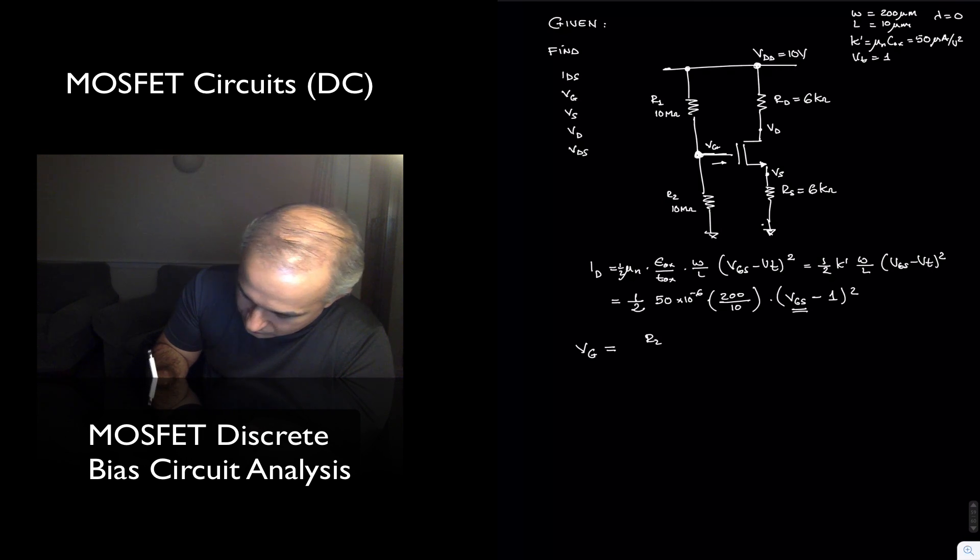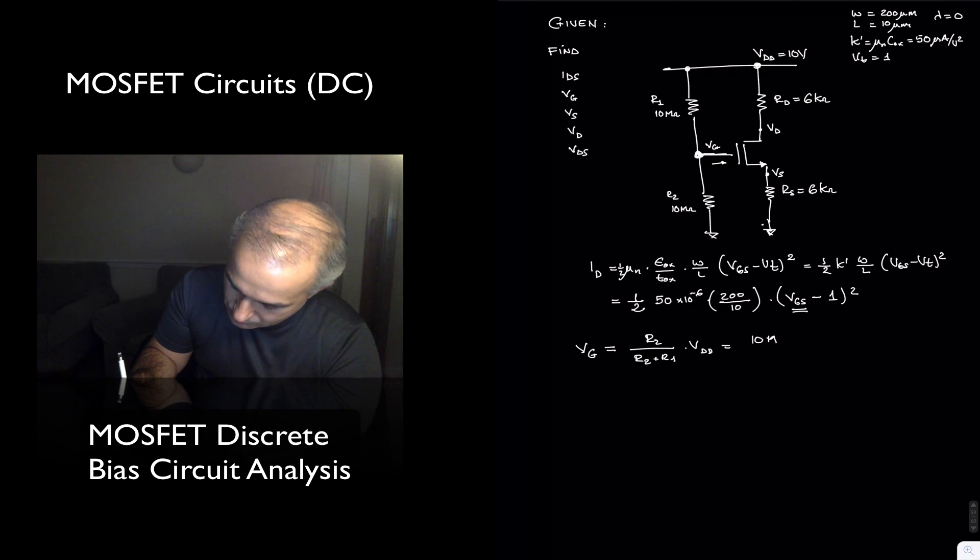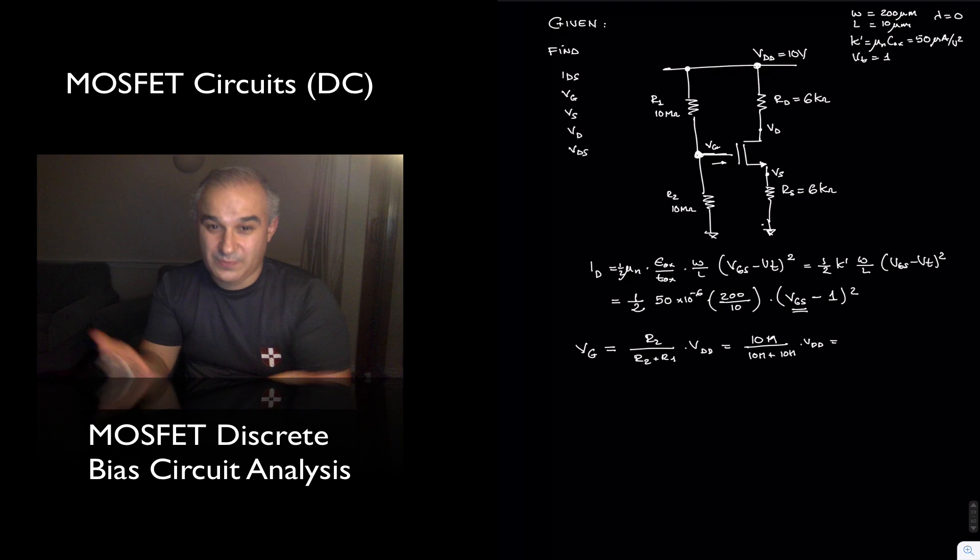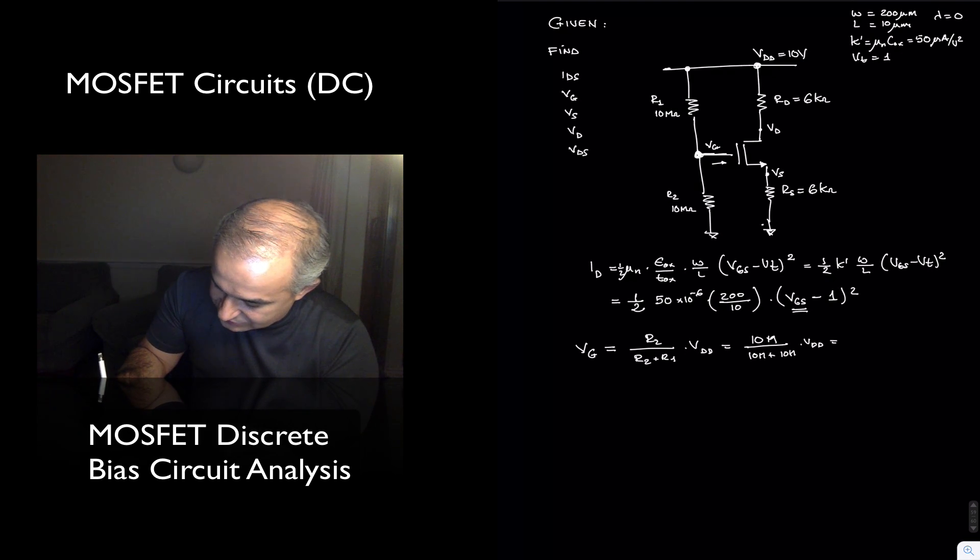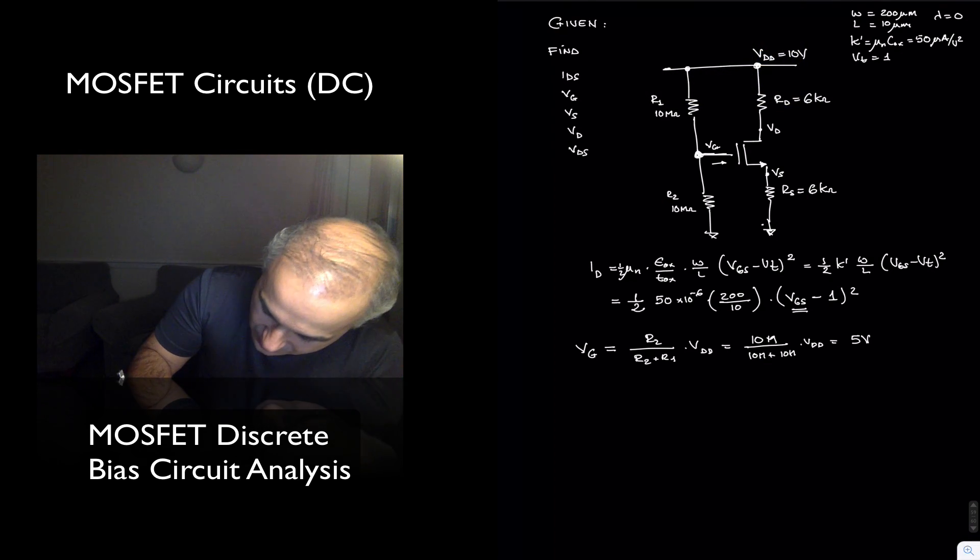The voltage at the gate is R2 divided by R2 plus R1 times Vdd, or 10 meg divided by 10 meg plus 10 meg times Vdd. They are the same value, it's a voltage divider times 10 in this case, so this is 5 volts.